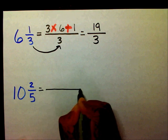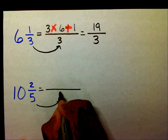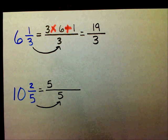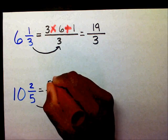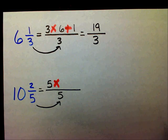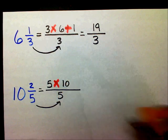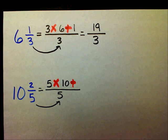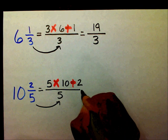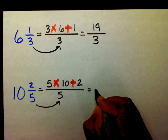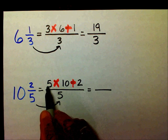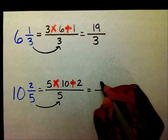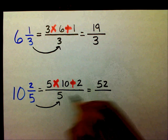We want to bring our five over. We're going to say five times ten plus two. Five times ten is fifty, plus two is fifty-two fifths.